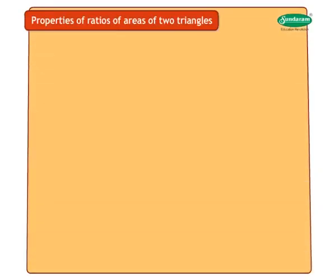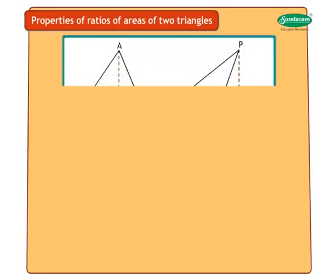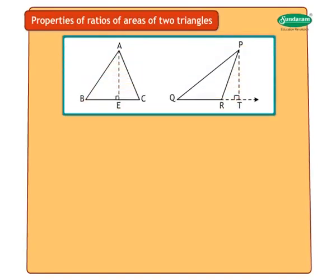Let's begin the properties of ratio of areas of two triangles. Look at the figure. Here we have two triangles: triangle ABC and triangle PQR.